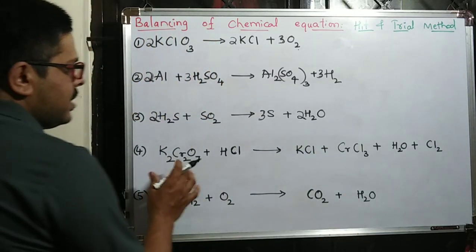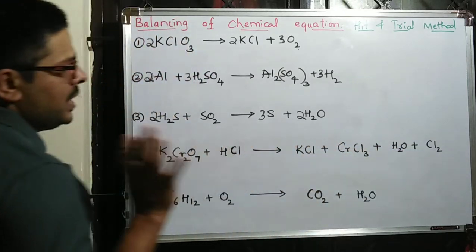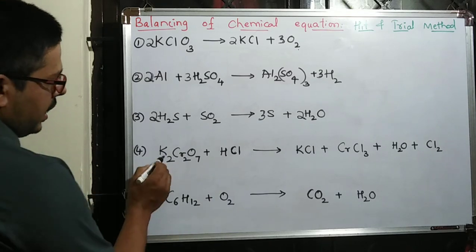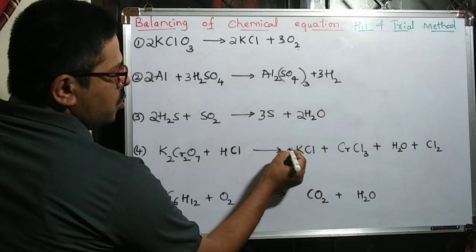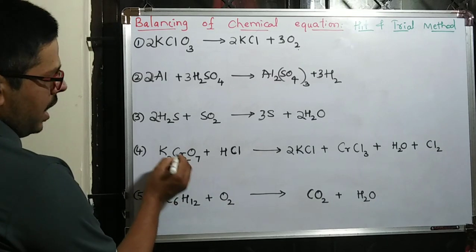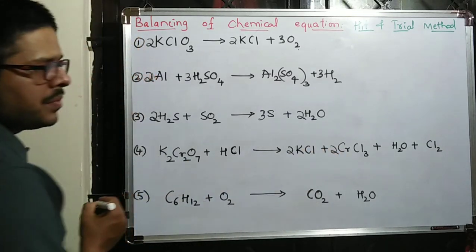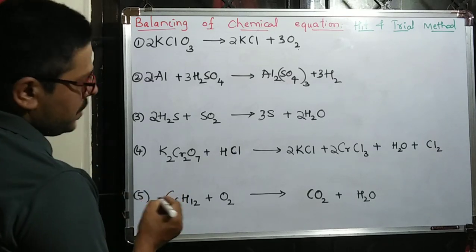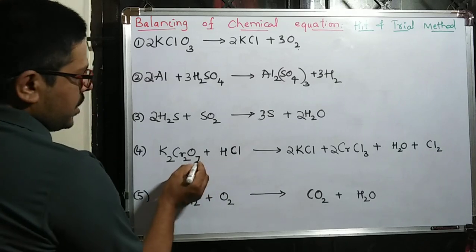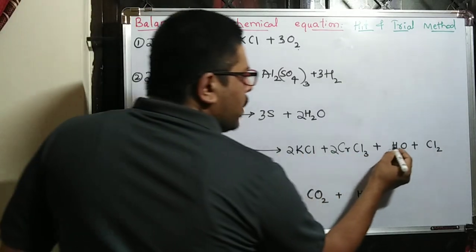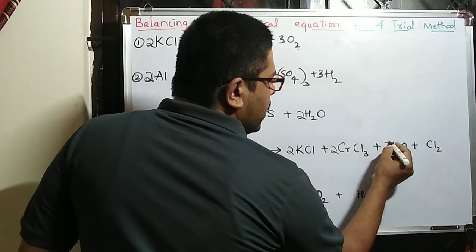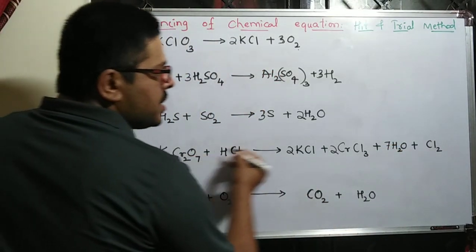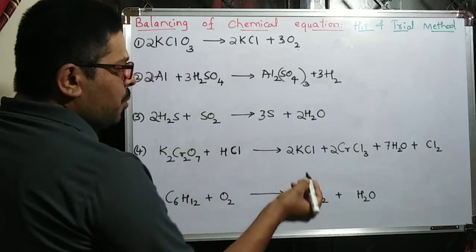Now the fourth reaction. This is the largest molecule. K2 is there — first write 2. Cr2 is there — first write 2. So you have written two 2s. K2 is balanced, Cr2 is balanced. Oxygen: seven oxygens are there on one side and one on the other, so write 7 here. Now hydrogen and oxygen are balanced, chromium is balanced, potassium is balanced.